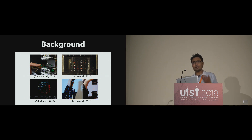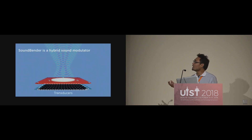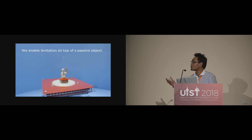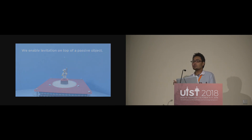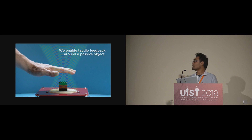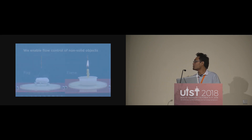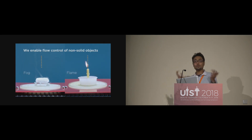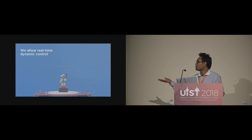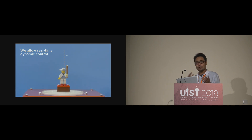We enable levitation even on top of passive objects — for example, this toy you can see. We also enable haptic feedback around blocks that are blocking the ultrasound, and we enable flow control of non-solid objects. Not only that, we can also manipulate them even though blocked by this object on left, right, top, and bottom.